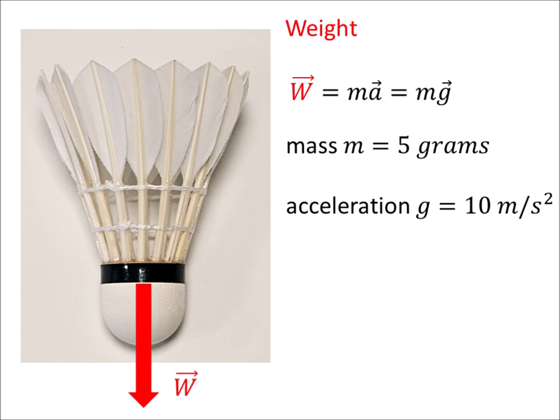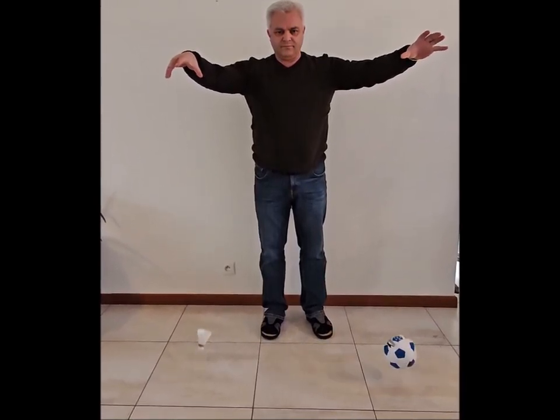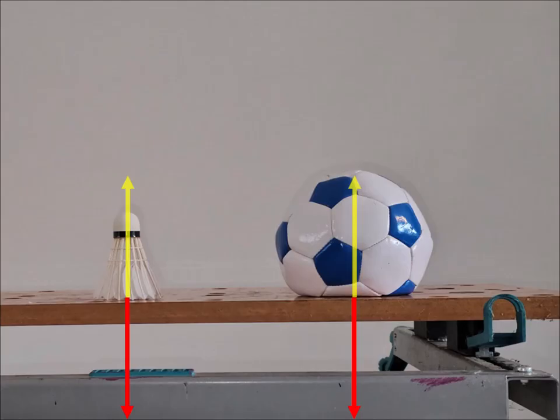The weight of an object is a product of its mass m and the acceleration of gravity g. The mass of a badminton shuttlecock is 5 grams. The acceleration of gravity accelerates equally different objects of different masses, such as a ball or a shuttlecock. The objects on this table are fixed because their weight in red is compensated by the reaction of the table in yellow.